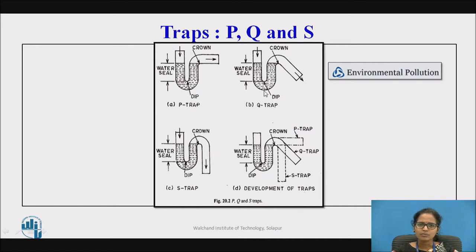The Q trap — you can see that the shape of this trap is similar to that of the S trap. It is mostly provided on upper floors rather than ground floors. The depth of the water seal is around 60 to 70 mm. This is the crown where you have the deviation.